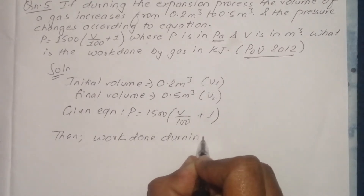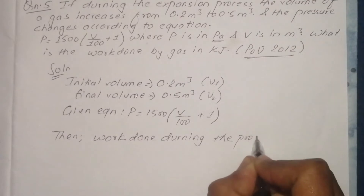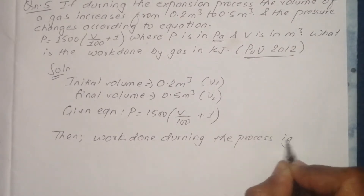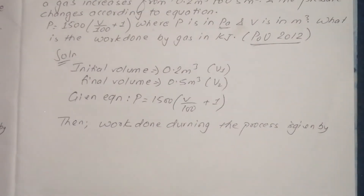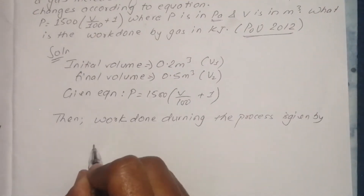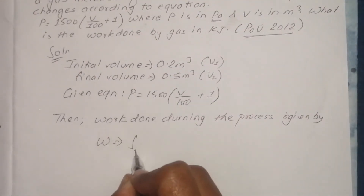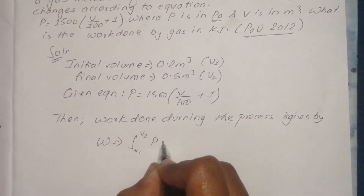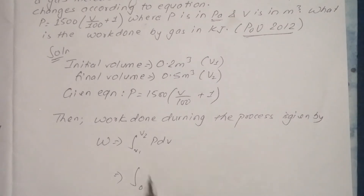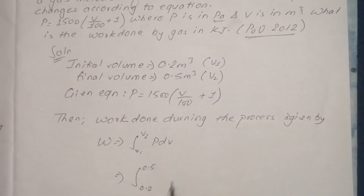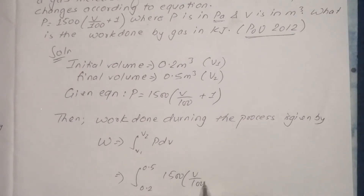During the process, work done is given by: W = integration of P dV, evaluated from the initial volume to the final volume.